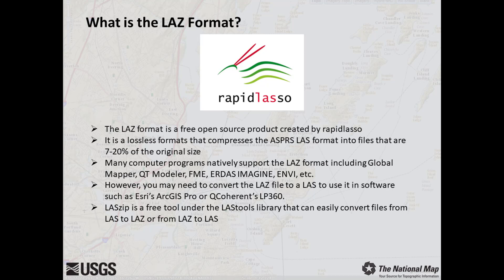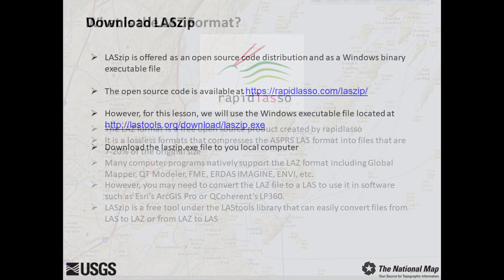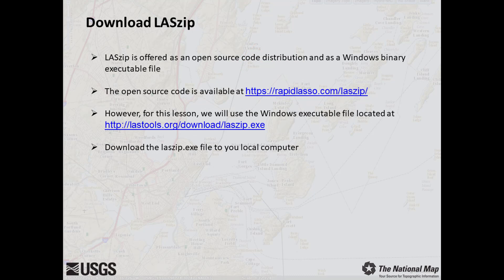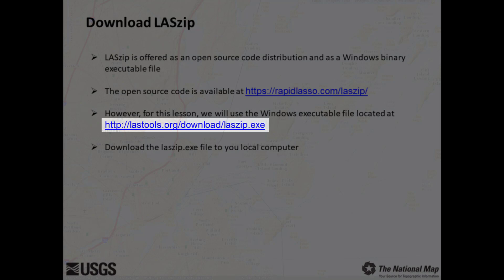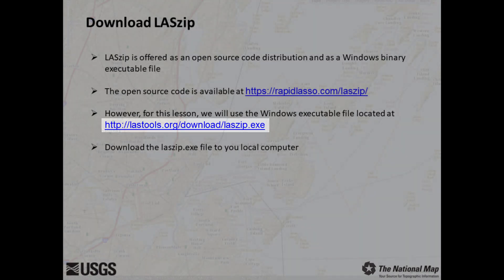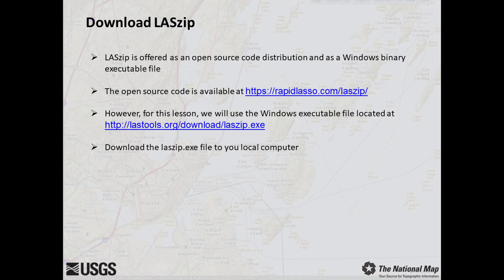However, several software products such as Esri's ArcGIS Pro and QCoherence LP360 require you to convert LAZ into LAS first. LAS-ZIP is a free tool under the LASTools library that can easily convert files from LAZ to LAS or from LAS to LAZ. LAS-ZIP is available as open source code and as a Windows binary executable file. For this lesson, we will use the Windows executable file located at lastools.org/download/LASzip.exe. Go ahead and download LASzip.exe to your local computer, to the same location that you saved the unzipped lesson data.